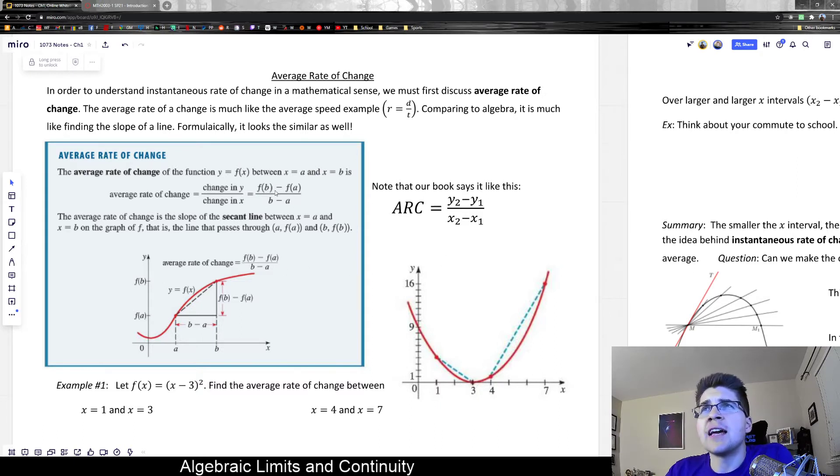The formula could be written using function notation, where f(b) represents the y2 value. Our book has it written in a standardized slope formula, which is exactly the same thing. But I'm going to be using function notation because it's helpful to think about it this way when we're doing calculus.